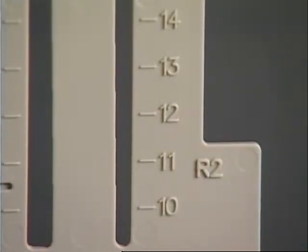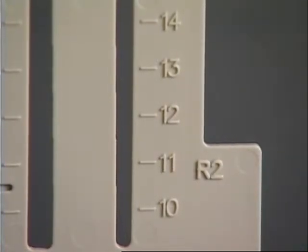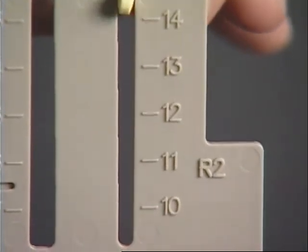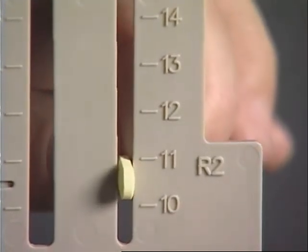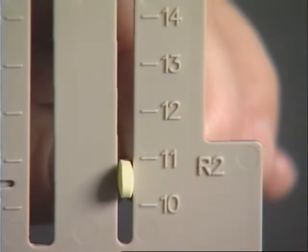The second measurement we need for caplets and elliptical tablets is the domed edge. Insert the med into the track. Proceed down until it stops. This particular measurement is an 11.